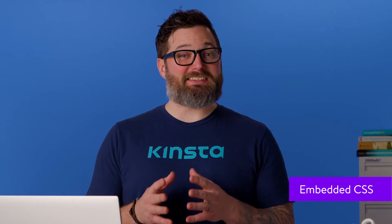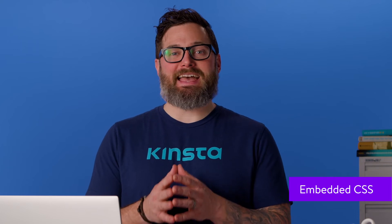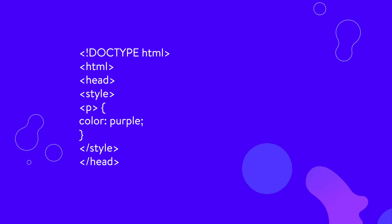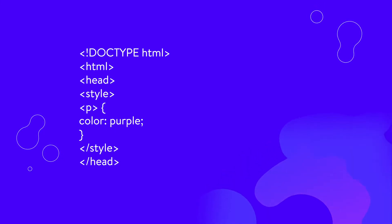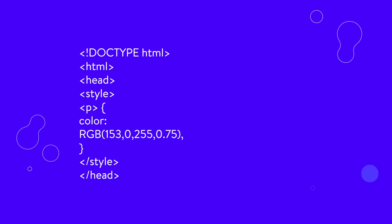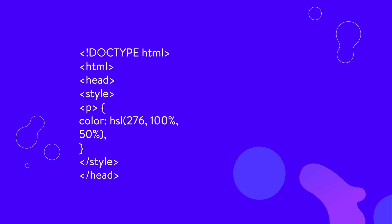Embedded CSS is within the style tags and placed in between the head tags of your HTML document. The code will look like this if you want to use the color name. The code above will change the color of every paragraph on the page to purple. Similar to the inline CSS method, you can use different selectors to change the font color of your headings and links. If you want to use the hex code, here's how that code would look. This following example uses the RGBA values so you can see how you can set the opacity of a color. And the HSL code would look like this.